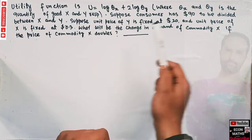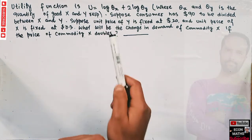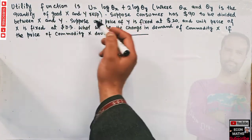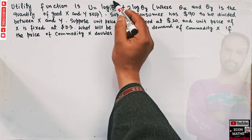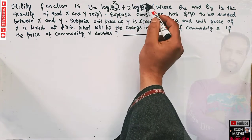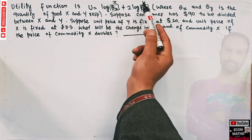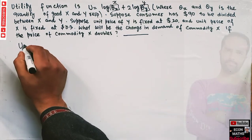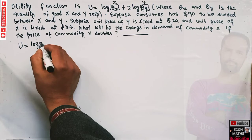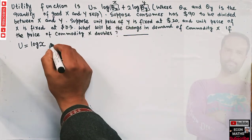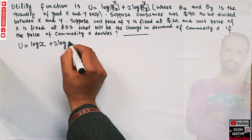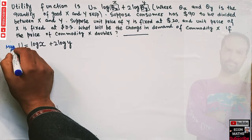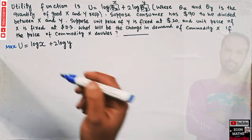Let's see how to solve this. For simplicity, I'll write X in place of Qx and Y in place of Qy, where X and Y denote the quantities of goods X and Y. So our utility function is U = log(X) + 2·log(Y). We want to maximize this utility function subject to the budget constraint.